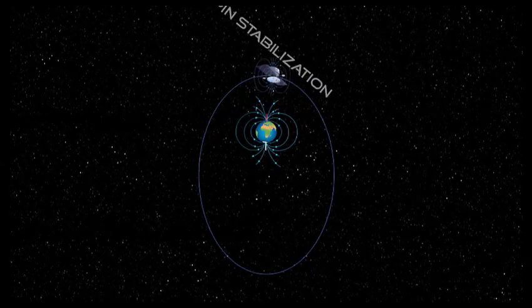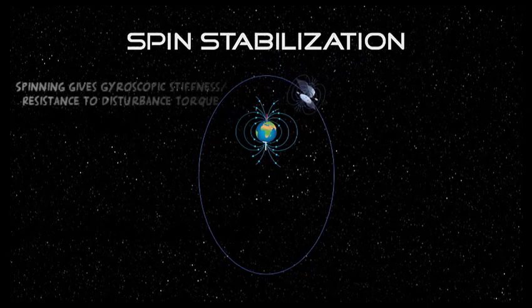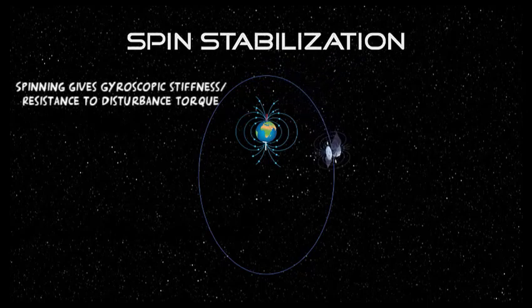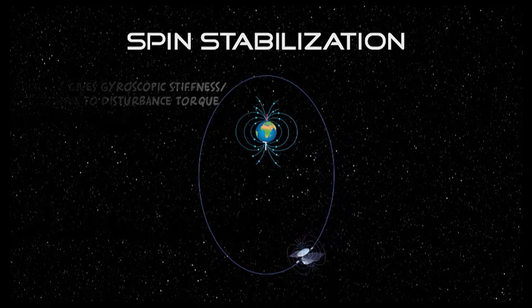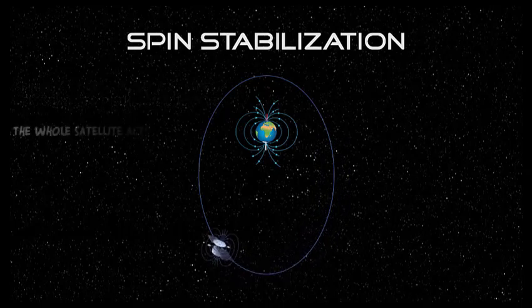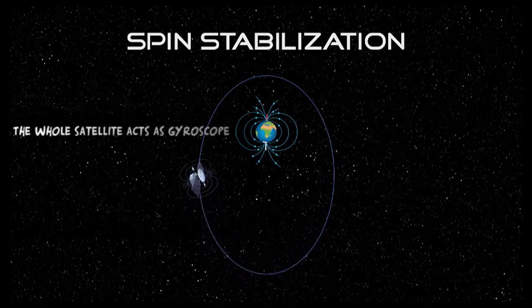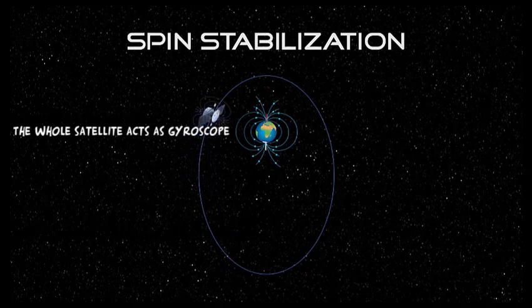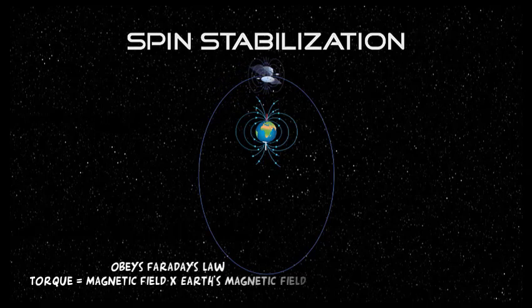Spin stabilization of satellite. Spinning a rigid body gives it angular momentum and gyroscopic stiffness or resistance to disturbance torque. In spin stabilization, the entire satellite spins, which means that the satellite's attitude is very stable because the satellite as a whole acts as a gyroscope.